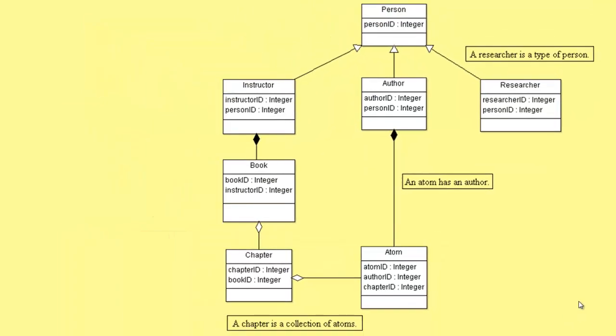You'll notice that the symbols for these three kinds are different. We've got the open triangle for is a type of. We've got the filled diamond for has an. And we've got the open diamond for is a collection of. And these are the diagramming tools that we need for UML.